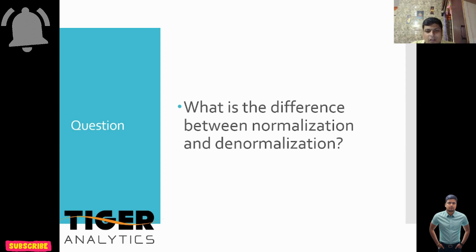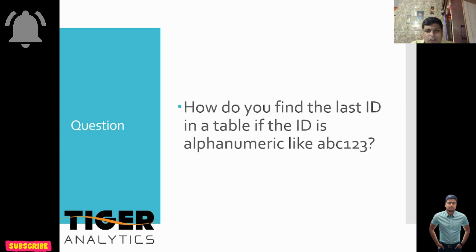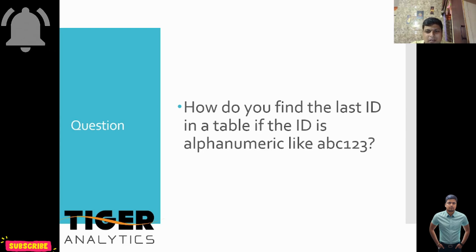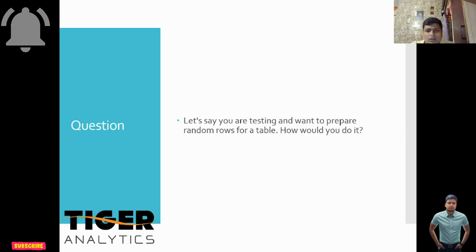Another question: how do you find the last ID in a table if the ID is alphanumeric — for example, like ABC123? How do you find the last ID in that table? You need to know how to handle this.